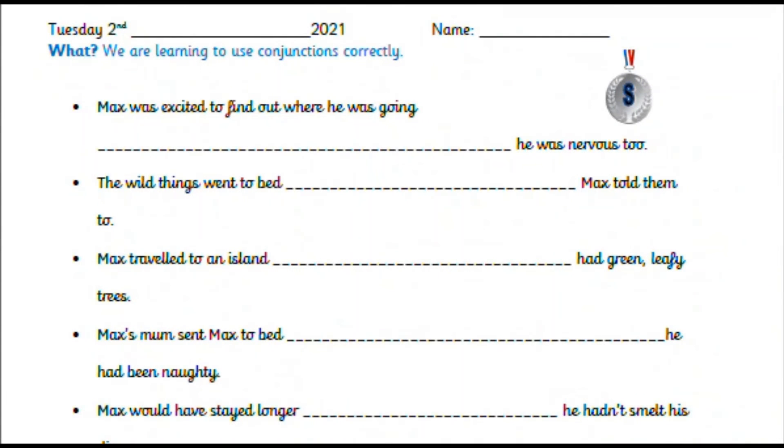So your challenge for today is to fill in the gaps with the correct conjunction. Some of them might have more than one option. It would slightly change the meaning of the sentence, but some of them do have two options. If you are finding this a little bit tricky, then go back and have a look at the bronze activity. Because there are some choices to choose from. So you've got two options and you pick which one you think fits the sentence the best.